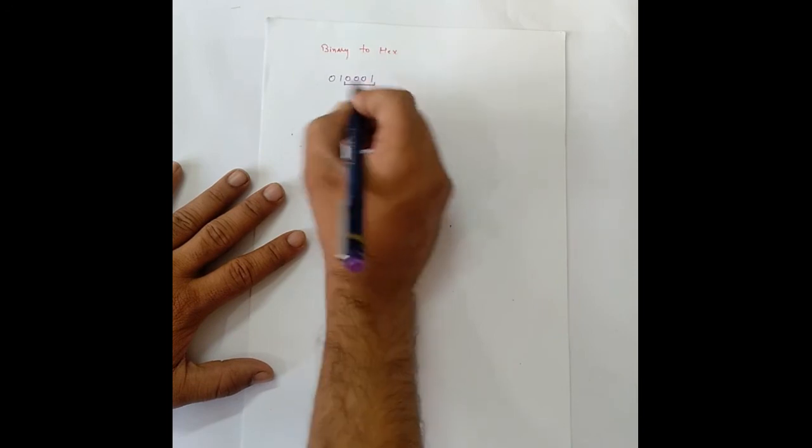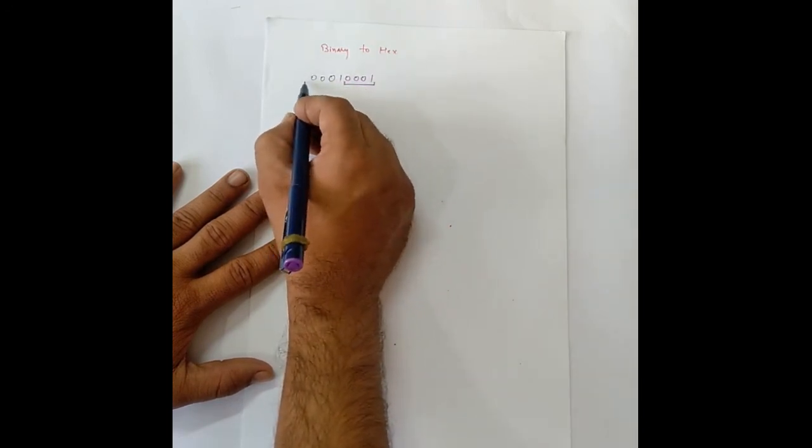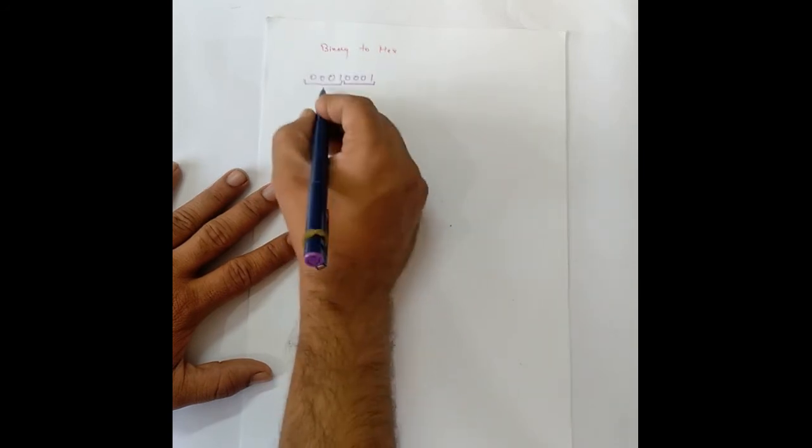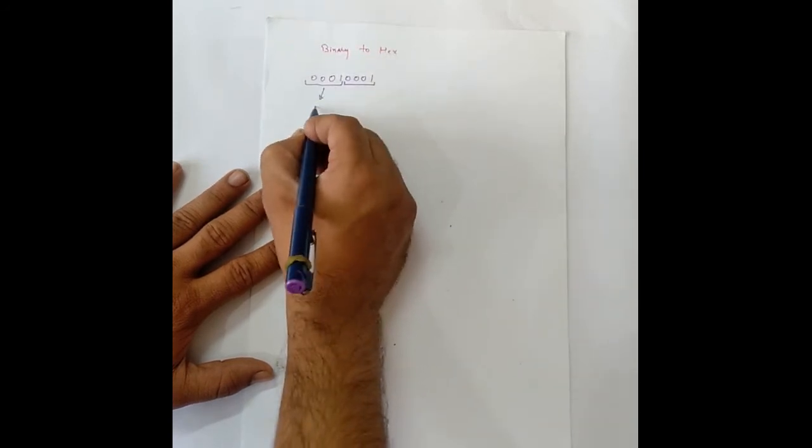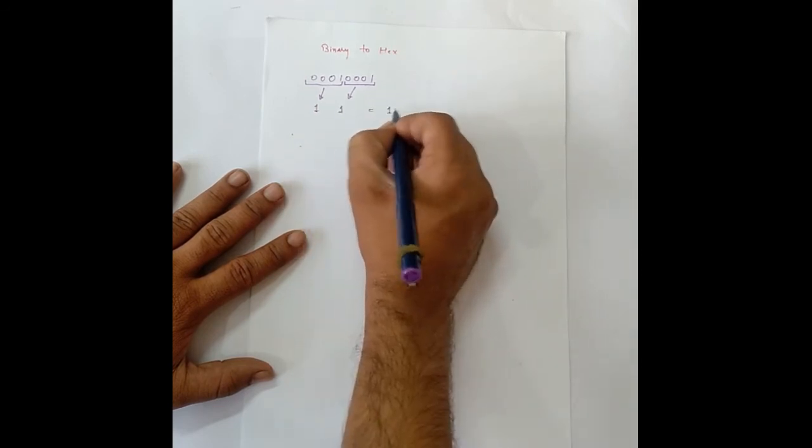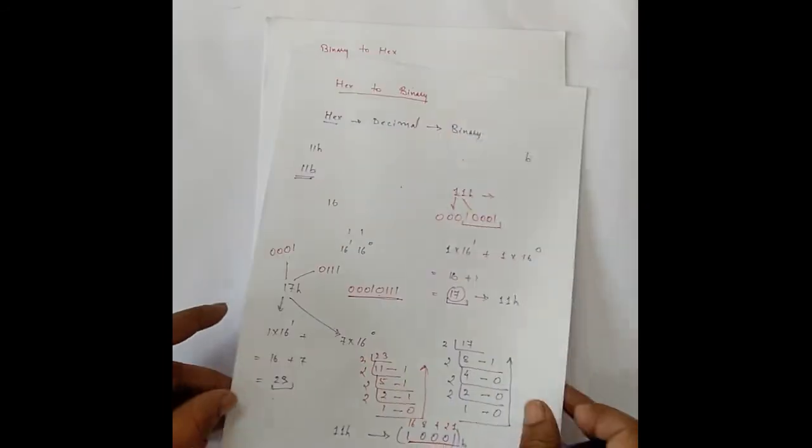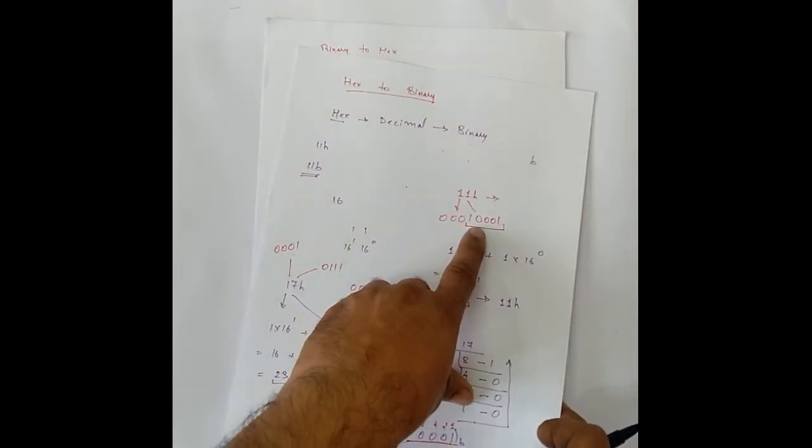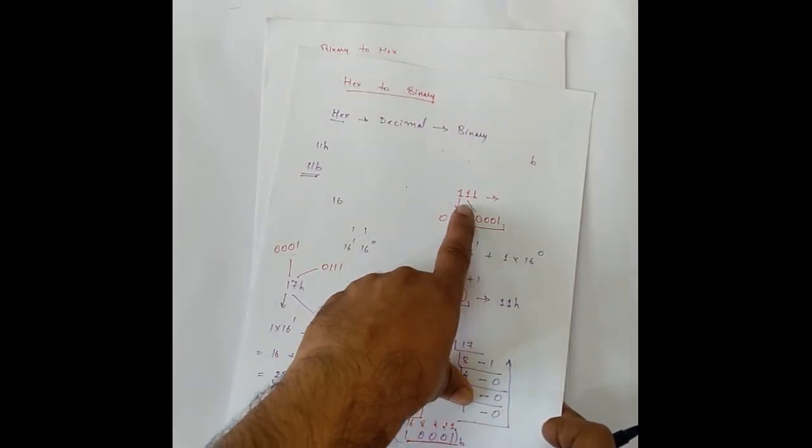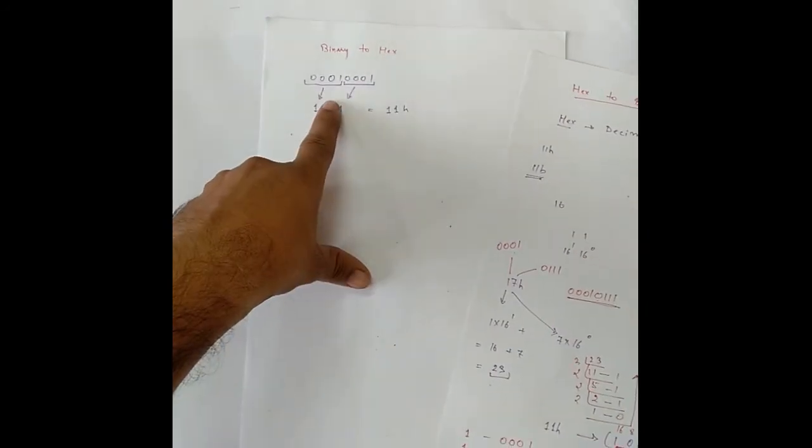So, we will take 4 binary places and we will add extra zeros here because they won't have any weight. And the hexadecimal value of this is 1, the hex of this is 1. So, it gives us 11 in hexadecimal. This is what we had calculated here. So, the binary 1 0 0 0 1 is the binary for 11 hexadecimal which is what we have got here.